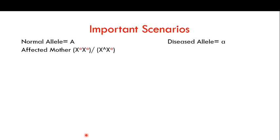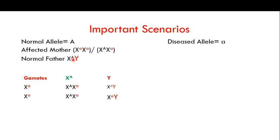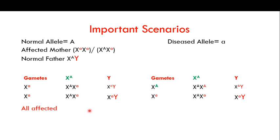Another important scenario: the mother is affected. She can be affected in the homozygous or heterozygous form, and this matters. With a normal father carrying only a normal X chromosome, if the mother is homozygous affected, all offspring — male and female — are affected, because all receive a disease allele from her.